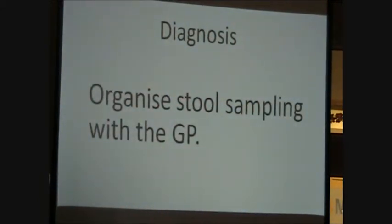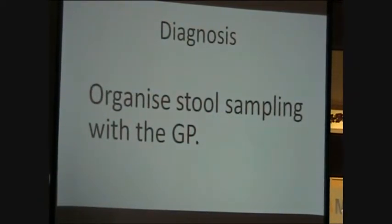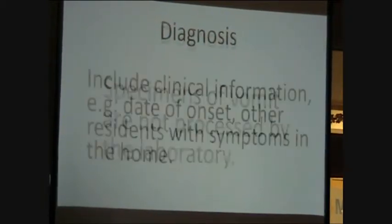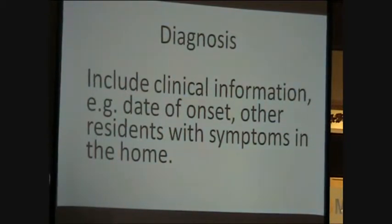When you suspect that a patient has norovirus, you should arrange for the resident to have a stool specimen tested in the laboratory. This should be arranged with the resident's GP. Specimens of vomit are not tested by the laboratory. The specimen request form should include details of the resident's symptoms, when the symptoms started, and whether there are any other residents with symptoms in the care home.